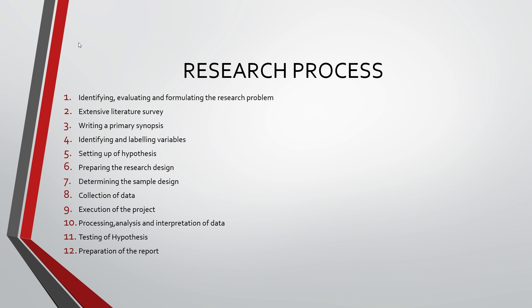The third step is writing a primary synopsis. After formulating the problem, a brief summary of it should be written down. This helps the researcher have an idea about the facts and figures to be collected and the interpretations to be made. For this, an extensive literature survey is needed — academic journals, attending conferences, proceedings, government reports, books, personal documents, and public documents must be considered for reference.